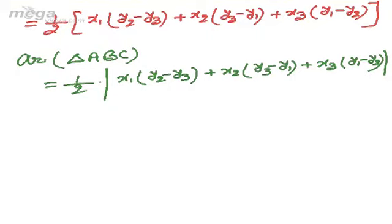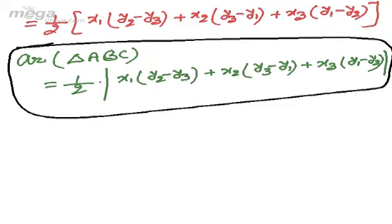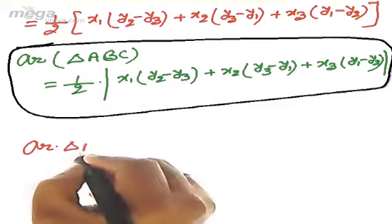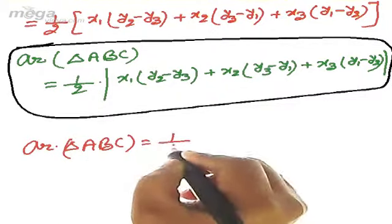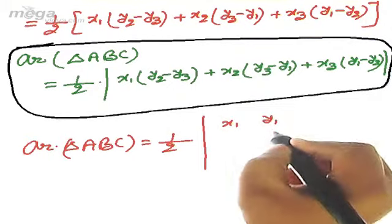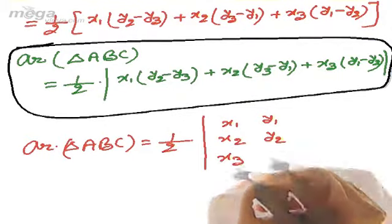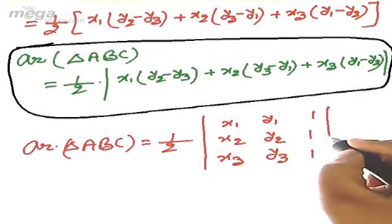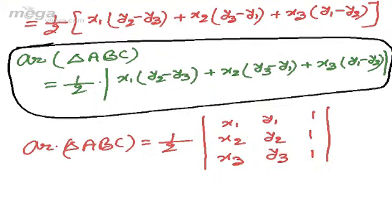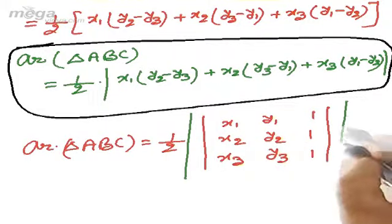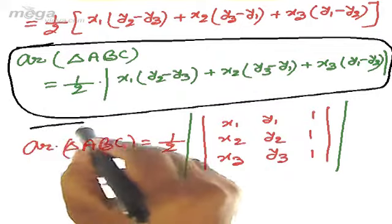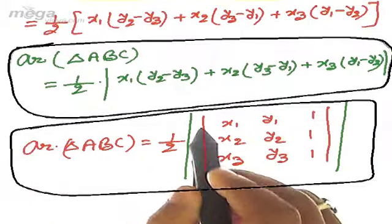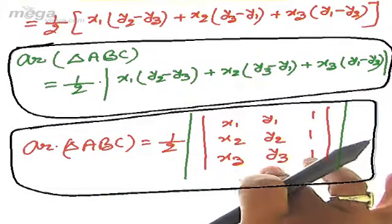To help remember this formula, it can also be written using a determinant. Area of triangle ABC = ½ × |determinant of the matrix with rows (x1, y1, 1), (x2, y2, 1), (x3, y3, 1)|. We write all three vertices and add a column of ones, then take the determinant and apply the mod sign since area cannot be negative. After expansion this gives the same result.